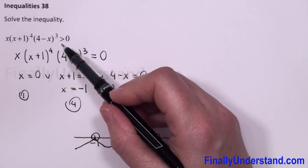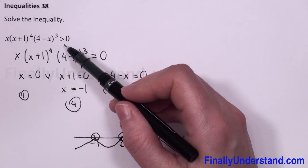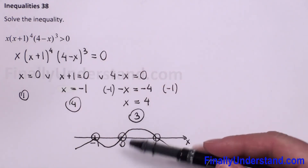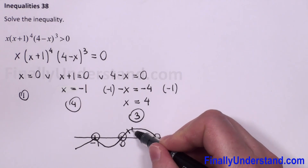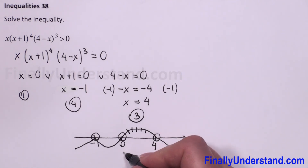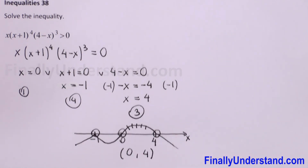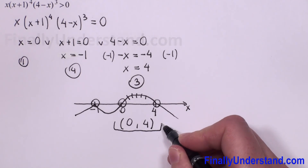Because we have a strictly greater-than inequality, the roots are not included. We need to find where the expression is greater than zero — meaning the values above the number line. That region is from 0 to 4, so the solution is the open interval (0, 4).